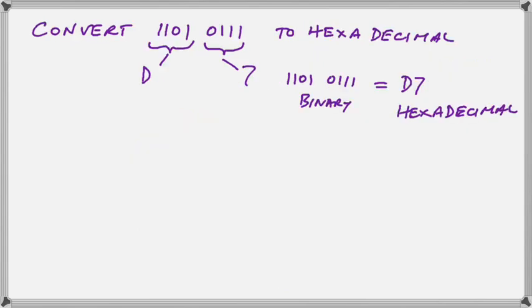Now we want to convert binary to hexadecimal. Well, once again, that's a piece of cake, because we simply divide our binary into groups of 4 bits, as shown there, and we find out what is the equivalent.